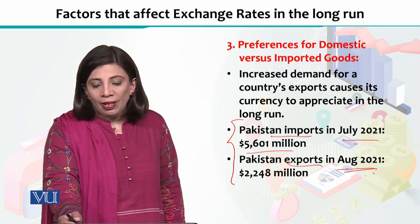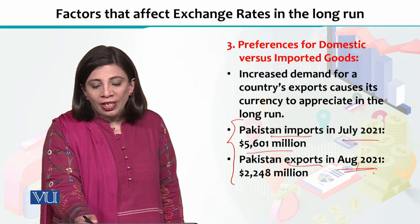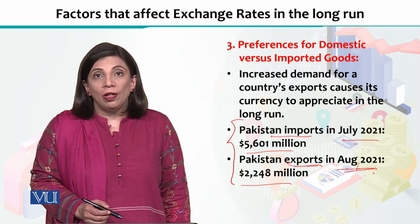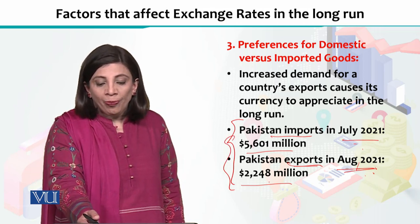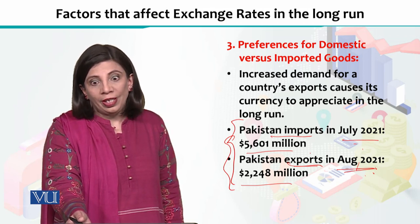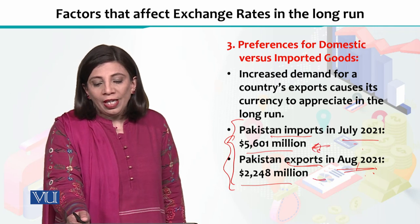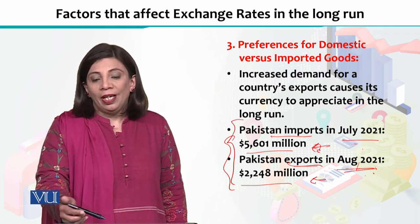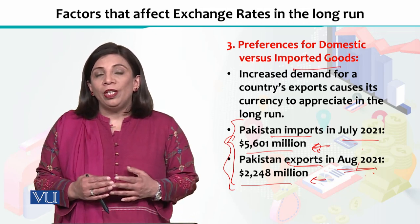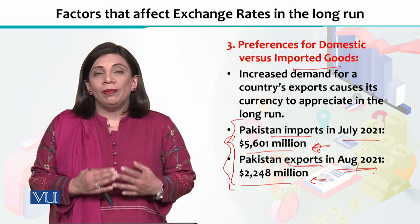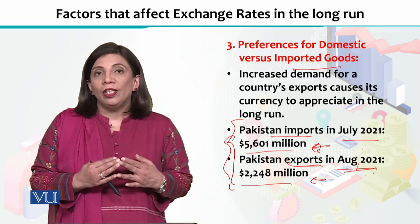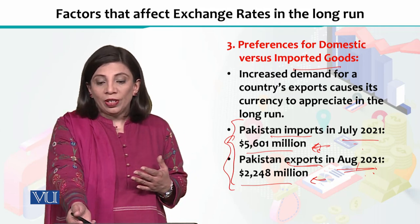In August 2021, the exports of Pakistan were only 2,248 million dollars. So you can see that we export roughly half of what we import. In this kind of situation, it means that we prefer imported goods more, and as a result, the Pakistani rupee's value keeps decreasing because we do more imports and exports are only half of imports, as you can see from the numbers.